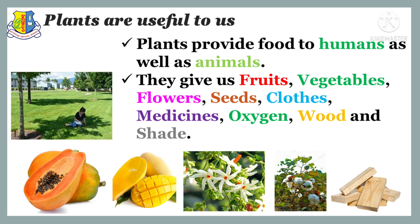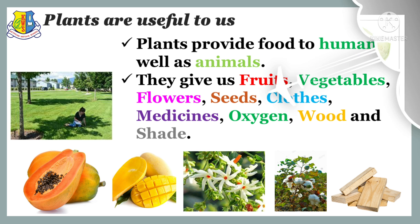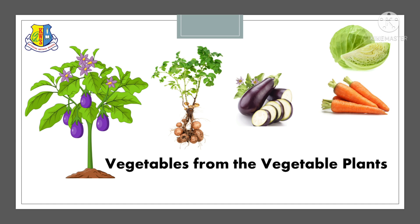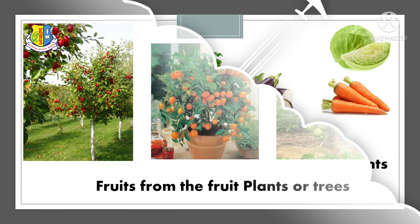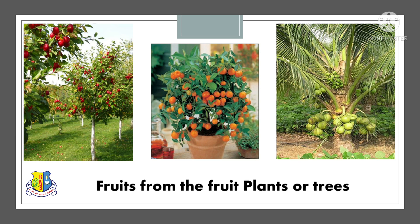We will see examples of useful plants. Look at these pictures. These are some of the vegetables: eggplant, carrot, cabbage, and potato. We can get vegetables from the vegetable plants.